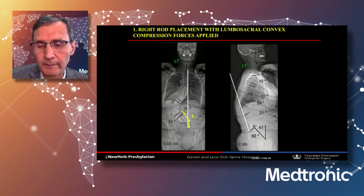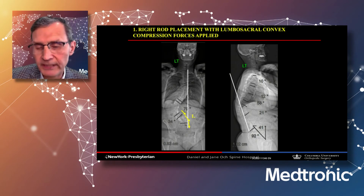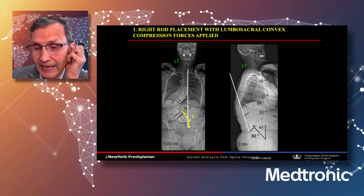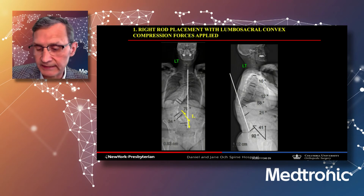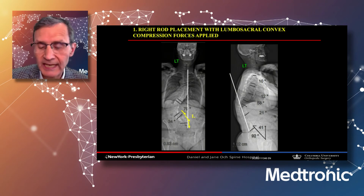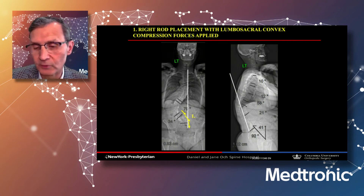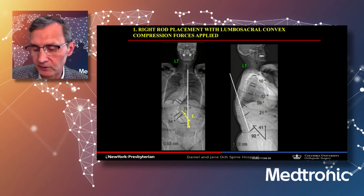My plan includes TLIFs at the bottom of the construct, PCOs throughout the thoracolumbar and lumbar region, and a unilateral L2 PSO, since L2 is the apex of both the coronal scoliosis and the thoracolumbar kyphosis. This three-dimensional carpentry will help correct the malalignment across all planes.